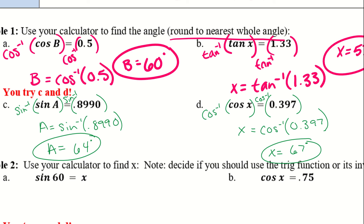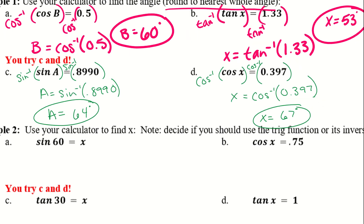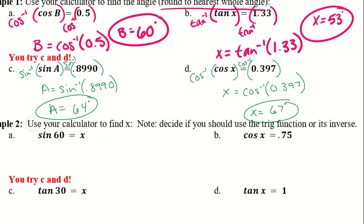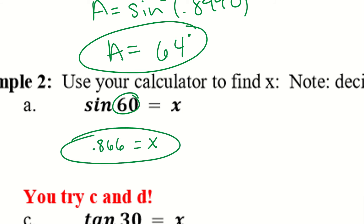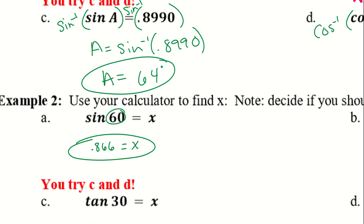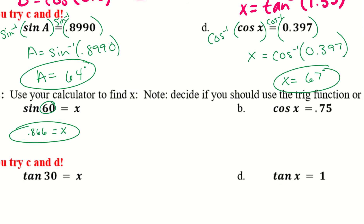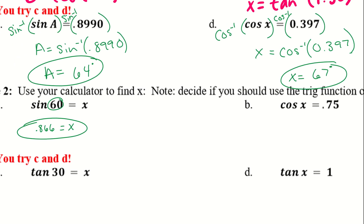Example 2: use your calculator to find x — decide if you should use the trig function or its inverse. Here we have sine of 60 equals x. Since we know the angle measure, I'm going to plug it in just as I see it. Sine of 60 equals x — plug that into the calculator and I get x equals 0.866. This doesn't specify decimal places, but round to at least two decimal places.